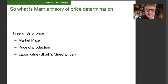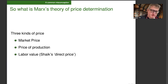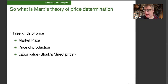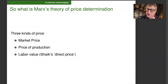So what is Marx's theory of price determination? Marx distinguishes three kinds of price: market price, price of production, and labor value. And if you want to have a price term for labor value, we can use Anwar Sheikh's term, direct price.